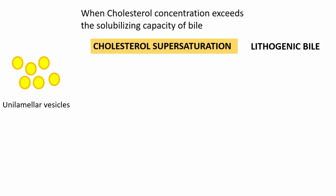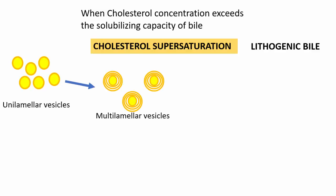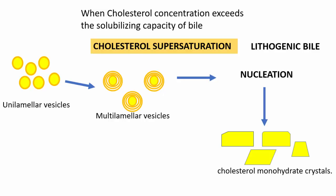When there is cholesterol supersaturation, unilamellar vesicles get converted to multilamellar vesicles — multiple layers of phospholipid bilayers — which then results in nucleation, another important step in gallstone formation. With supersaturation, cholesterol can no longer remain soluble, so they nucleate to form cholesterol monohydrate crystals. This is referred to as biliary sludge — a suspension of precipitates of cholesterol monohydrate in bile.